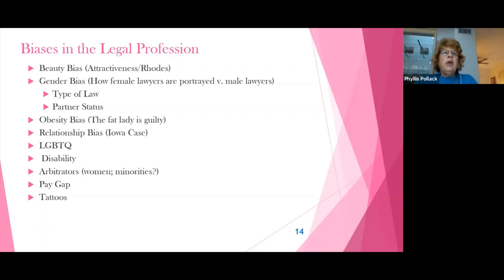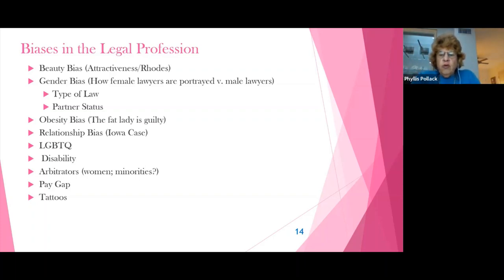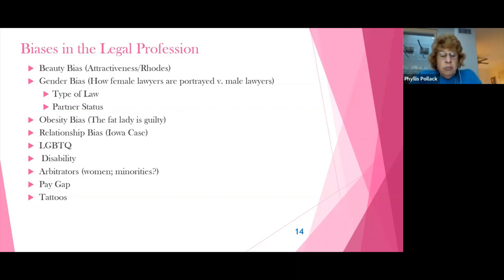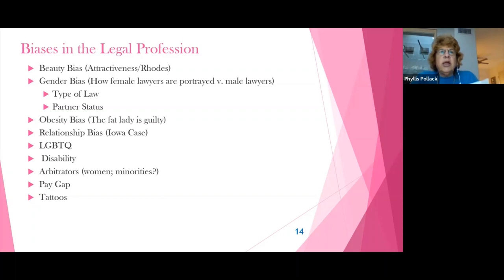Next are some statistics on LGBTQ. The Association for Legal Career Professionals found that in 2019, about 2.9% of lawyers self-identified as being LGBTQ, approximately 3,028 attorneys in the United States. As you can imagine, the majority of them are in four cities: New York City, Washington DC, LA, and San Francisco.